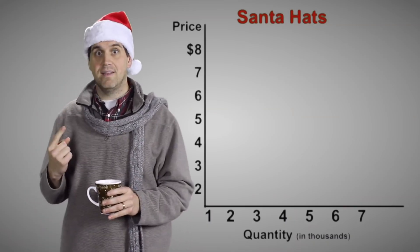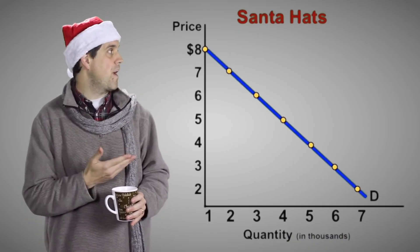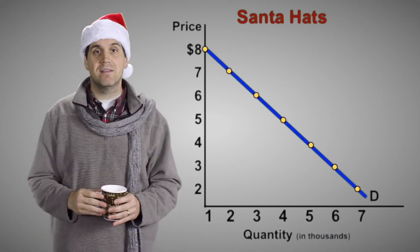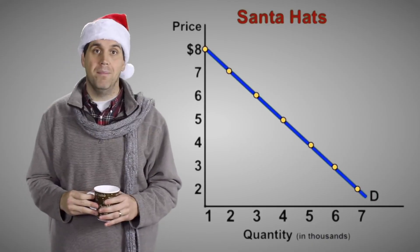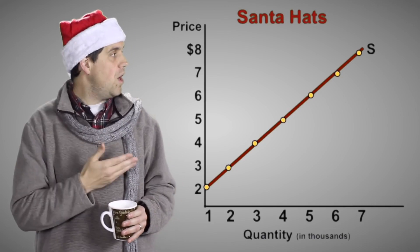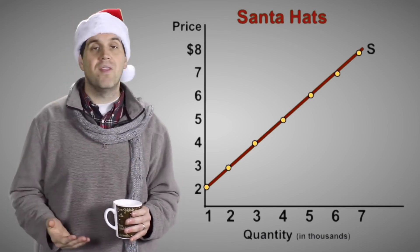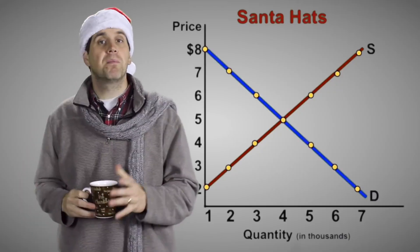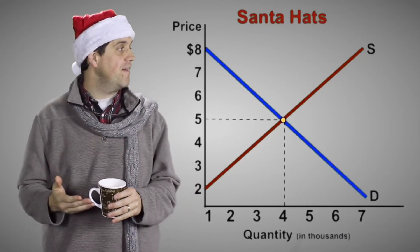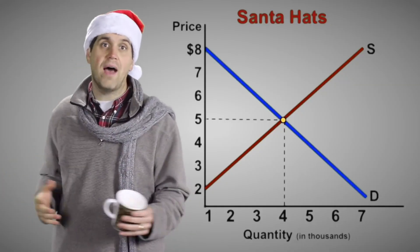Let's look at the market for Santa hats. The demand basically shows the number of people who are willing to buy hats at different prices. If the price is high, fewer people want to buy hats; if the price is low, more people want to buy them. The supply shows the number of producers willing to make hats — if the price is low, very few want to make them; if the price is high, more producers want to make more hats. Supply and demand come together and set the equilibrium price and quantity — let's say $5 and 4,000 hats.